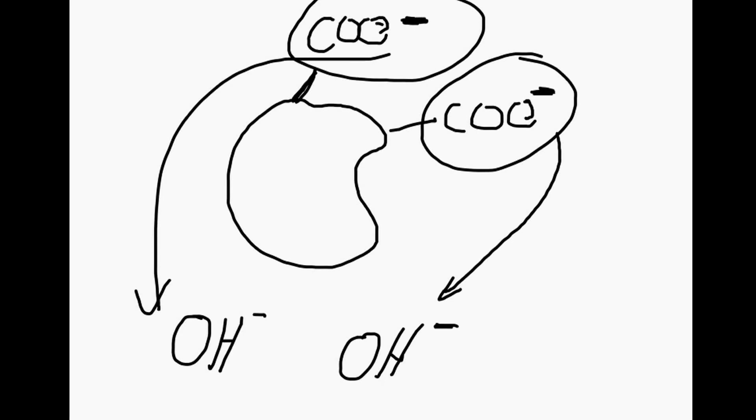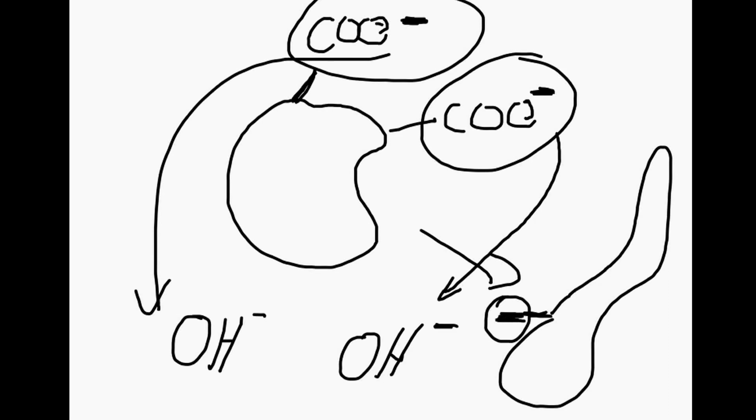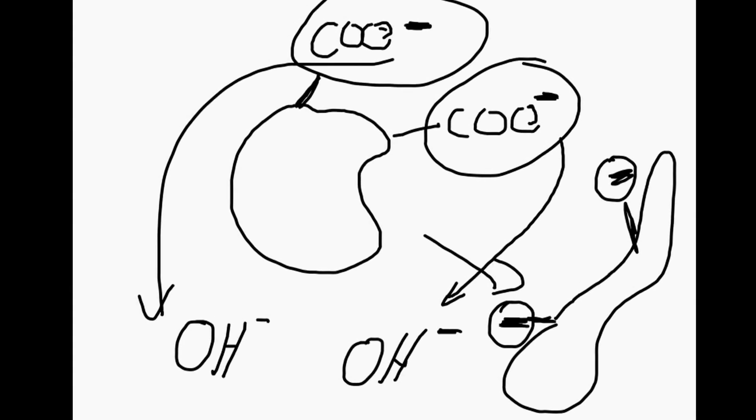This group would be negative, and you can imagine what happens if we've got two negative groups sitting next to each other. Again, they would repel each other and try to get away from each other as far as possible. They might distort the protein, with a negative group here and a negative group here, trying to pull away from each other and get out of each other's way as much as possible.